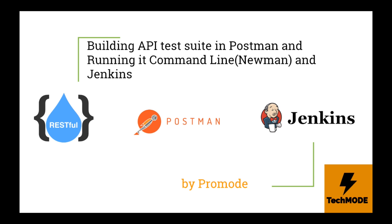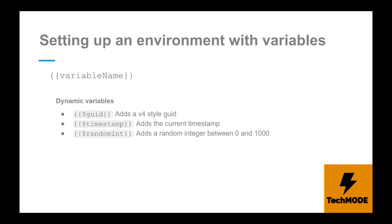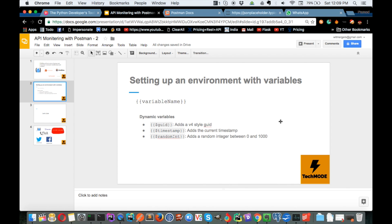Before we get started, let's understand how we can set up environment variables in our test suites in API testing. In Postman you can use variables using curly braces. There's a concept of environments where you can create different environments - for example a staging environment and a production environment, each with a different URL. You can switch between environments and run test cases according to them. There are also dynamic variables like GUID, timestamp, and random int that can be useful when making requests.